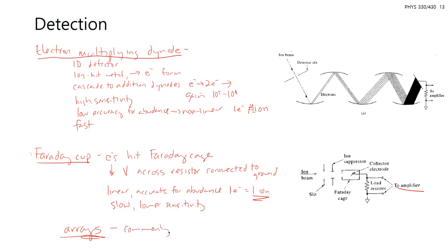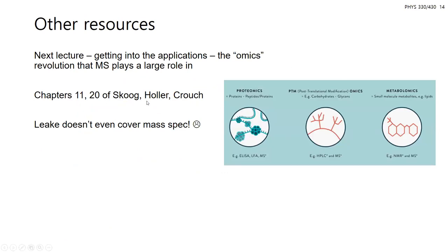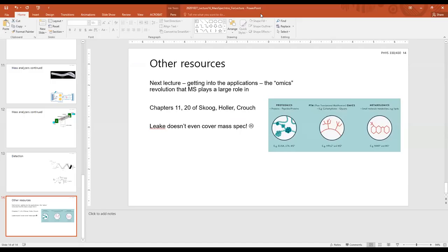Arrays of these detectors are more commonly used to increase data collection. For external references, Skoog Chapter 20 covers molecular mass spectrometry, and Chapter 11 covers detectors with more focus on atomic detection. The textbook we're using has only about a page and a half on mass spec, which is surprisingly brief given how large a research area it is. Thursday's lecture will cover applications — which should be more exciting than just instrumentation.